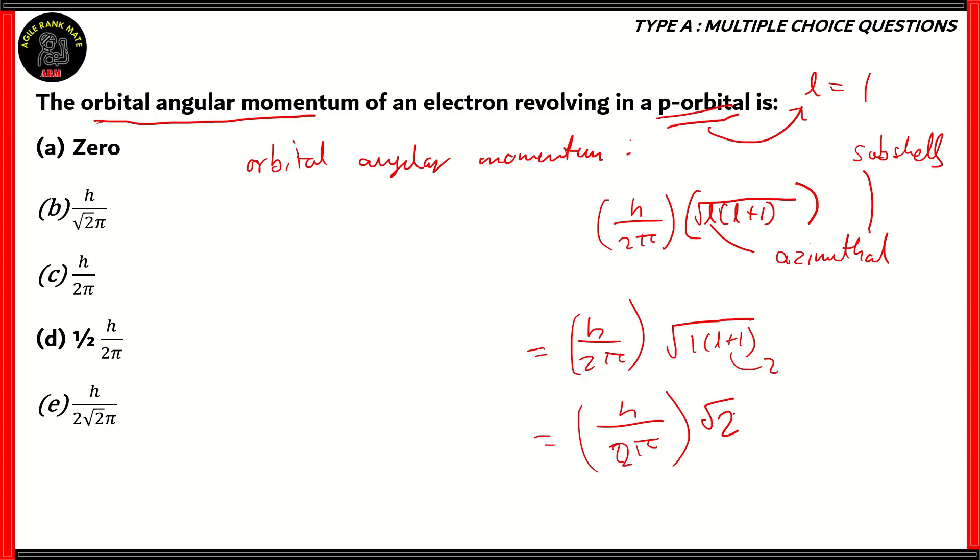Remember, the square root of 2 goes into the whole number 2 root 2 times. Therefore, the final answer for the orbital angular momentum of an electron in the p-orbital will be h by root 2 pi. Option B is the correct option. 0 is incorrect because h and pi are constants. Option C is incorrect because it has the whole number. Option D because there is the coefficient half. And option E is incorrect because there is a 2 root 2 in the denominator.